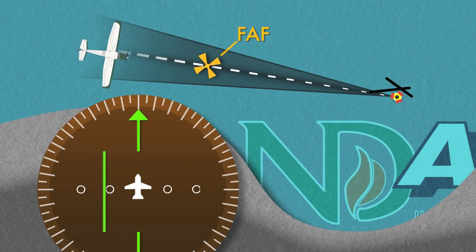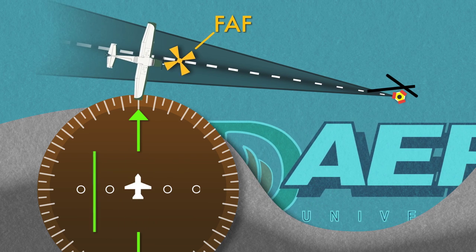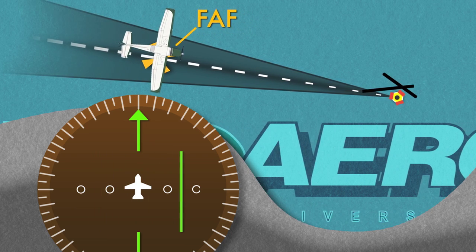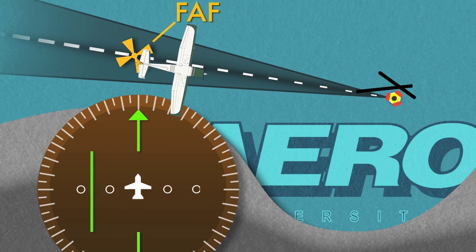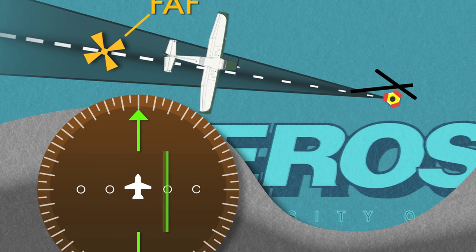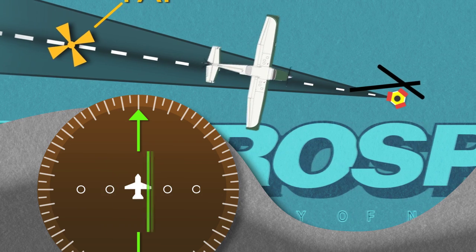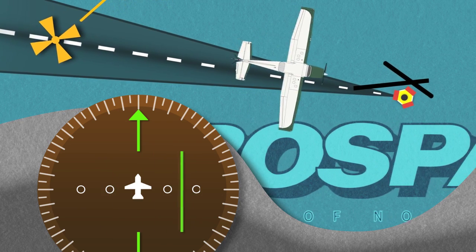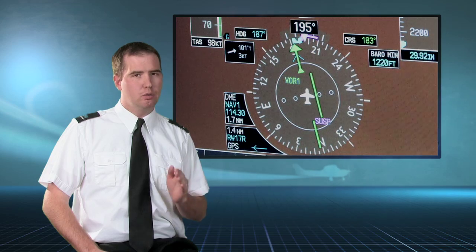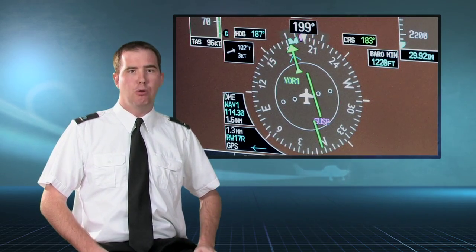Because the width of the final approach course gets smaller, the course deviation indicator will appear to be more sensitive. While the sensitivity actually remains the same — except in the case of a GPS approach — the needle is more likely to show even the slightest deviation from course. Make a heading correction of only a few degrees to re-intercept the proper course and continue inbound towards the airport.